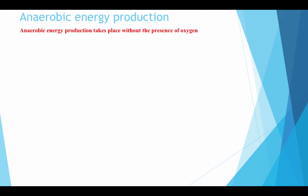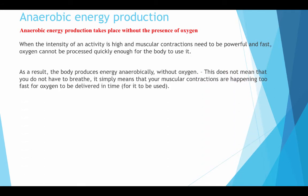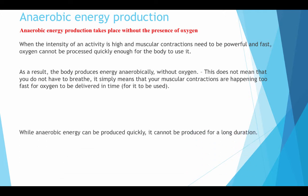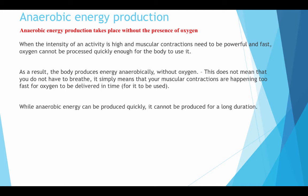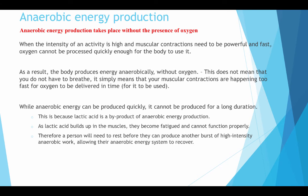Anaerobic energy production takes place without the presence of oxygen. When the intensity of an activity is high and muscular contractions need to be powerful and fast, oxygen cannot be processed quickly enough for the body to use it. As a result, the body produces energy anaerobically without oxygen. This does not mean that you do not have to breathe — it simply means that your muscular contractions are happening too fast for oxygen to be delivered in time. While anaerobic energy can be produced quickly, it cannot be produced for long durations. This is because lactic acid is a by-product of anaerobic energy production. As lactic acid builds up in the muscles, they become fatigued and cannot function properly. Therefore, a person will need to rest before they can produce another burst of high intensity anaerobic work, allowing their anaerobic energy system to recover.